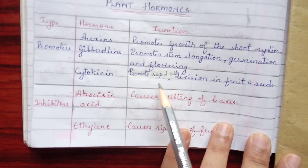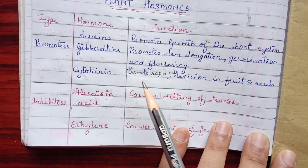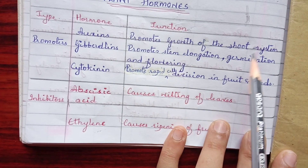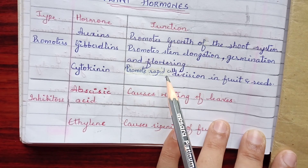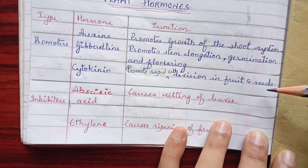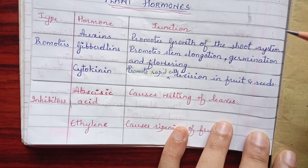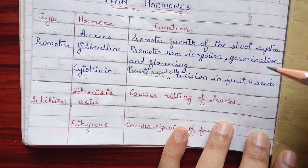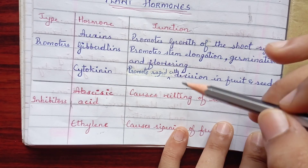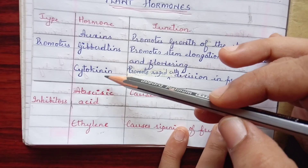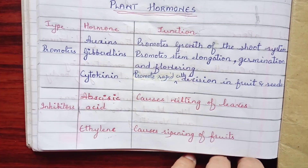Cytokinin promotes rapid cell division. Cell division in other parts of the plant is not as fast as where cytokinin is present. The best examples are fruits and seeds — they develop quickly and are gone within no time, which is why a special hormone, cytokinin, is present wherever rapid cell division is needed.